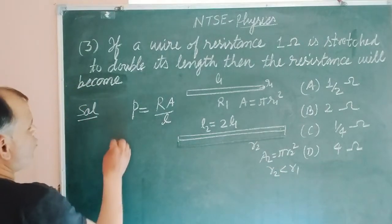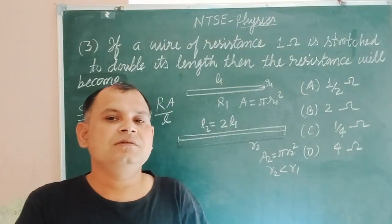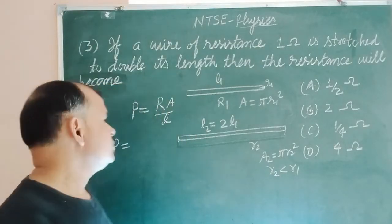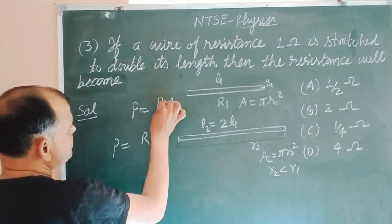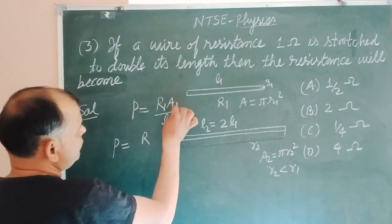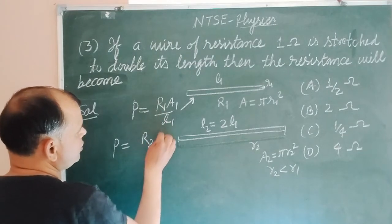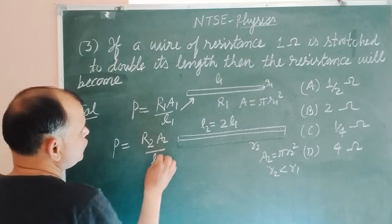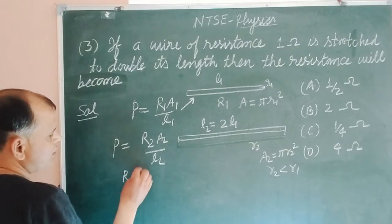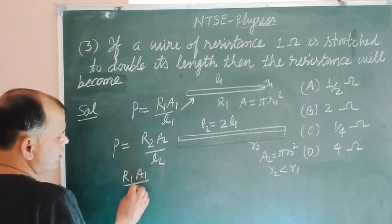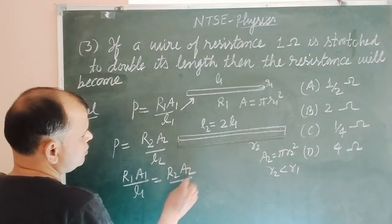The resistivity of the wire remains constant because the substance of the wire is the same. So rho equals R1 times A1 over L1 for the first wire. The new cross-sectional area is A2 equal to pi R2 squared. We set up: R1 times A1 over L1 equals R2 times A2 over L2.